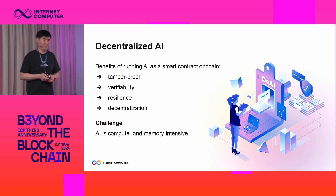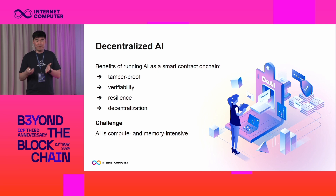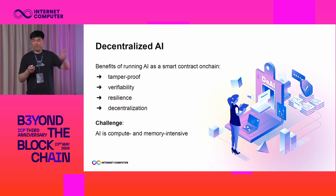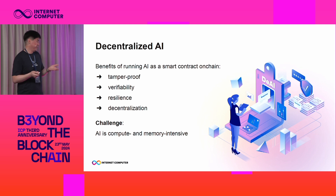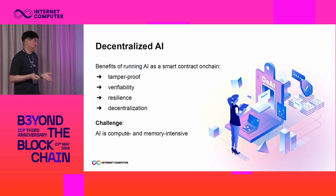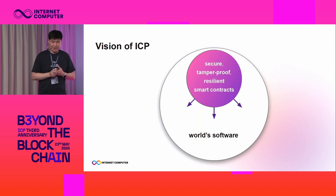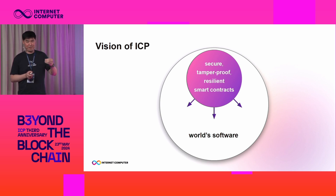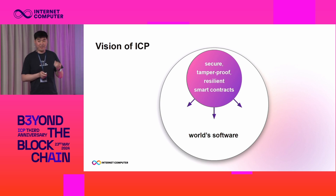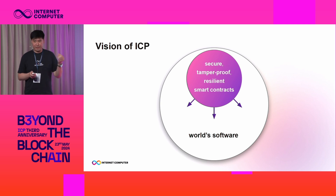There is a challenge though. Unfortunately, running AI computation uses more resources than transferring a meme coin — it's compute and memory intensive. But making smart contracts powerful by giving them compute and memory actually aligns very well with the vision of ICP.